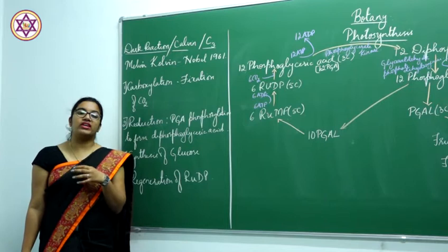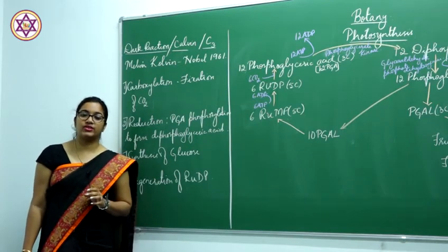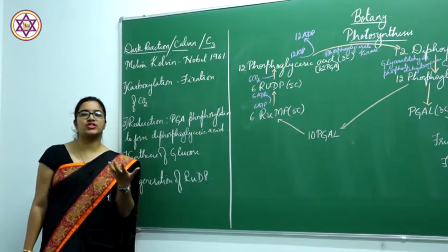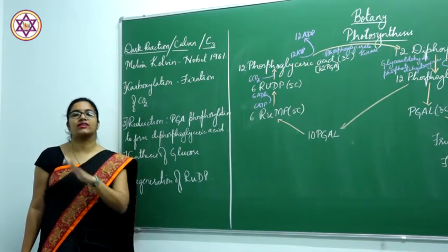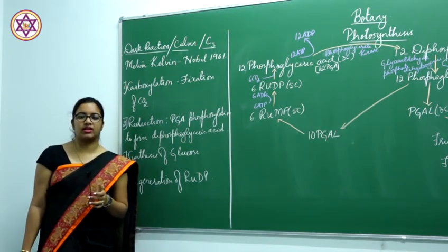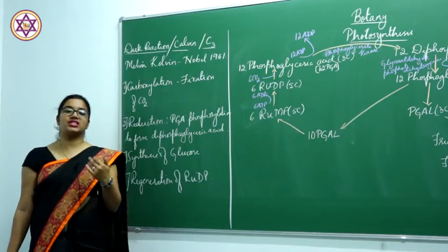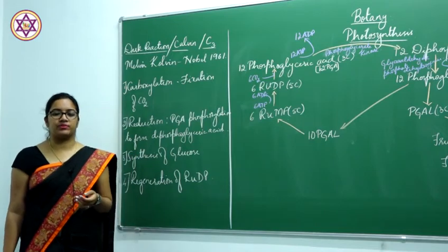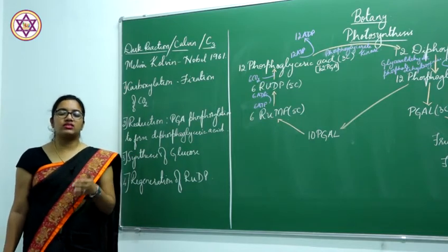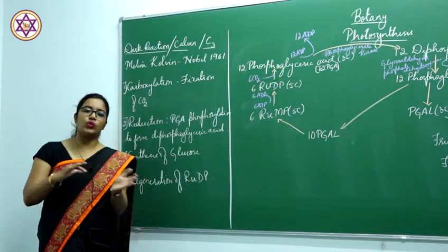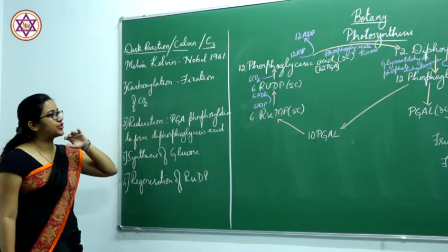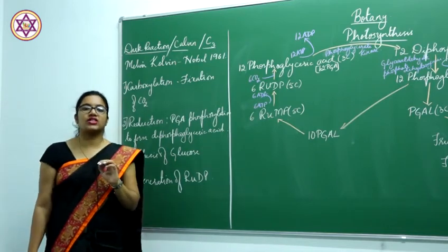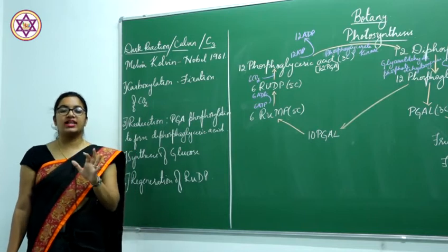We have discussed in detail about light reaction. That is phosphorylation, which is cyclic and non-cyclic. This occurs during the daytime. The following reaction is the dark reaction. Dark reaction occurs in the nighttime.